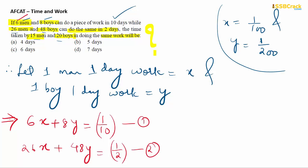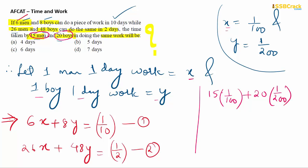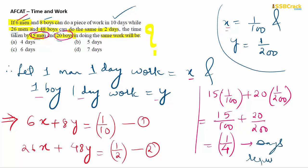Solving equations 1 and 2, we get x = 1/100 and y = 1/200. Now calculate 15 men and 20 boys one-day work: 15×(1/100) + 20×(1/200) = 15/100 + 20/200 = 15/100 + 10/100 = 25/100 = 1/4. So their combined one-day work is 1/4, meaning they finish in 4 days. The answer is option A.